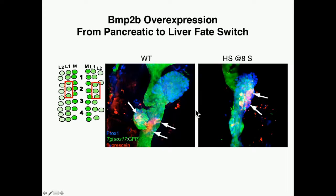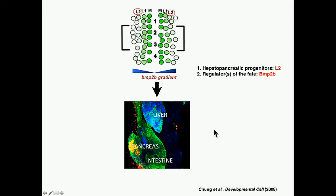We overexpressed BMP2B and found that lateral one cells, which usually give rise to pancreatic cells, instead gave rise to liver cells. This showed that BMP2B overexpression causes a pancreatic-to-liver fate switch. Through knockdown, overexpression, and single cell lineage tracing experiments, we found that the L2 cell is the bipotential hepatopancreatic progenitor cell, and BMP2B signaling is the pathway regulating the fate of these endodermal progenitor cells.